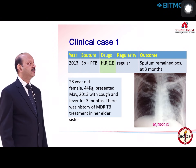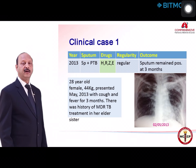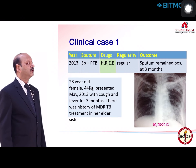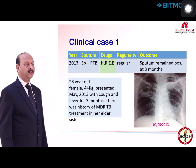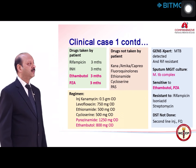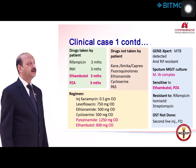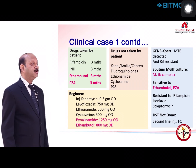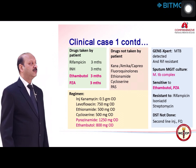Let us look at a clinical case. This was a 28-year-old female weighing 44 kg who came in May 2013 with cough and fever for 3 months. There was history of MDR-TB treatment in her elder sister — history of contact with an MDR-TB case. Looking at the drugogram, in 2013 she received 4 first-line drugs, yet remained sputum smear-positive after 3 months. The X-ray showed bilateral extensive disease with a cavity lesion on the right side. The laboratory report showed sensitivity to ethambutol and pyrazinamide, but DST against these 2 drugs is not reliable. She was documented as resistant to rifampicin, INH, and streptomycin. DST had not been done for second-line injectables or fluoroquinolones.